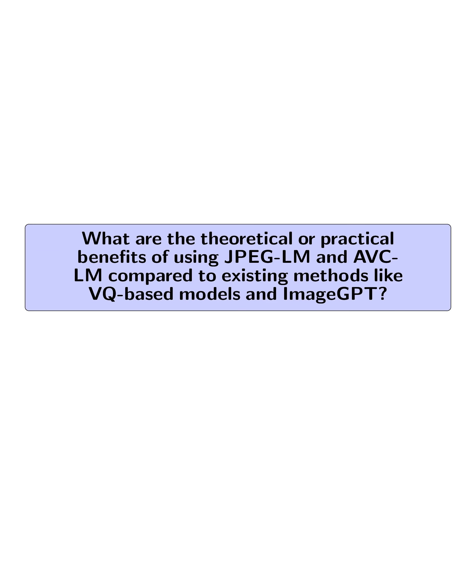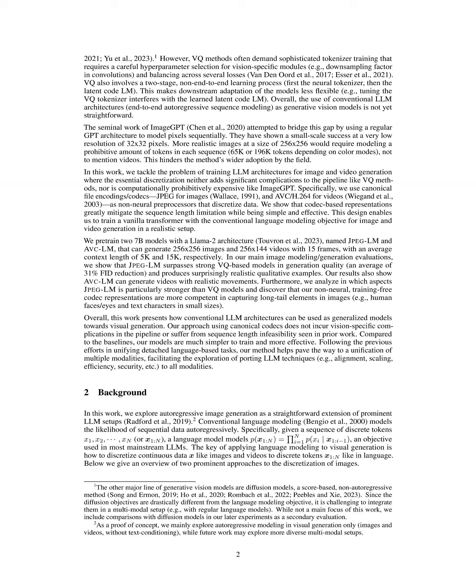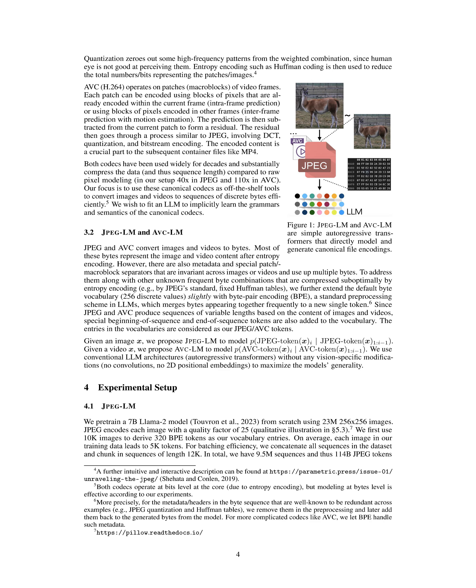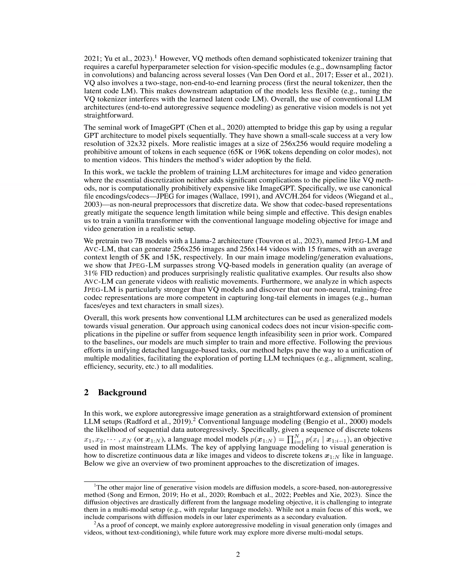What are the theoretical or practical benefits of using JPEG-LM and AVC-LM compared to existing methods like VQ-based models and image GPT? JPEG-LM and AVC-LM utilize canonical codecs — JPEG for images and AVC H.264 for videos — as non-neural preprocessors, which simplifies the discretization process and avoids the complexities of vector quantization methods, such as sophisticated tokenizer training and a two-stage learning process. This results in a more straightforward end-to-end training pipeline that enhances flexibility for downstream adaptations.